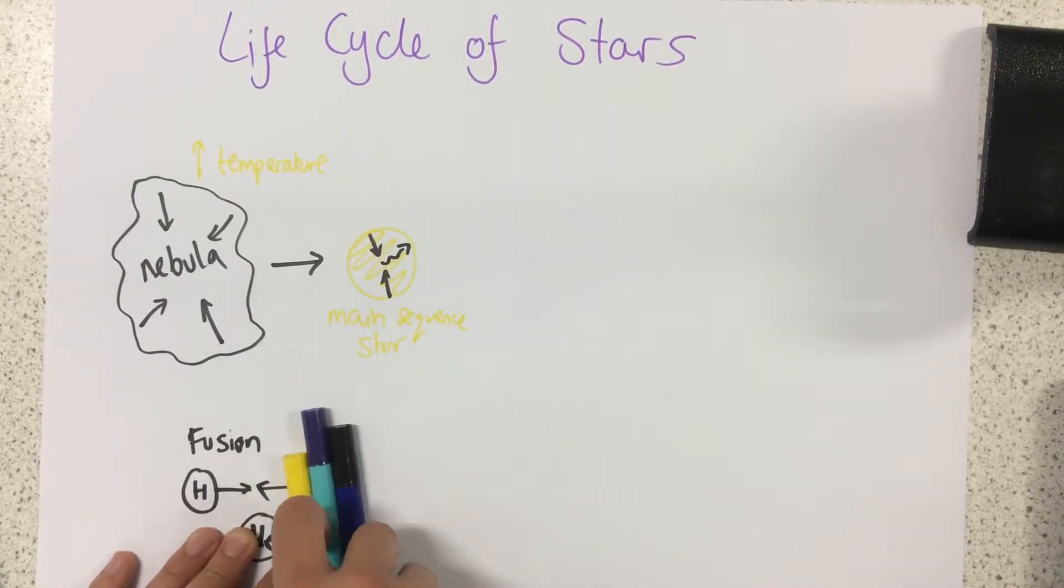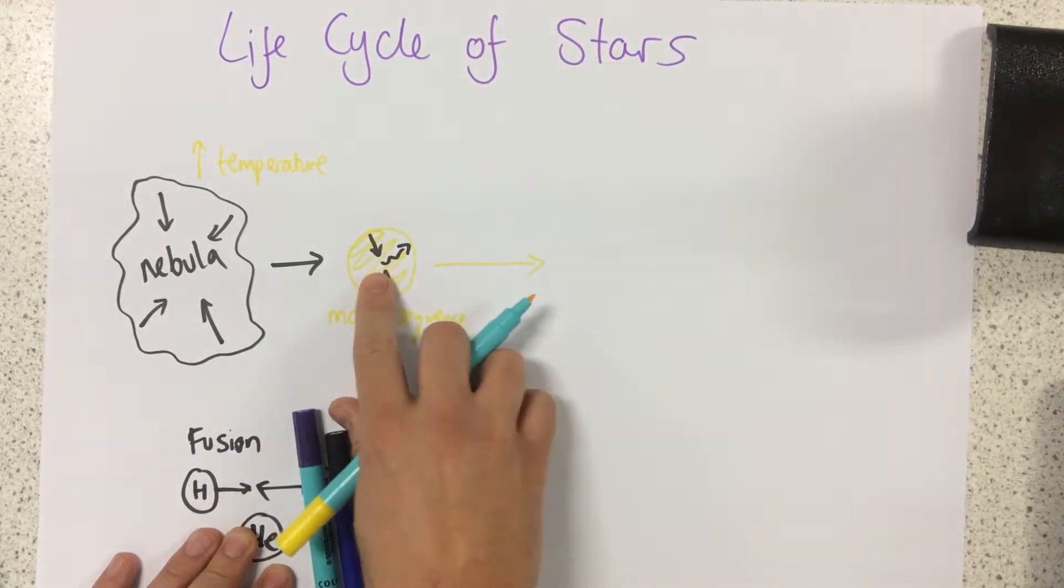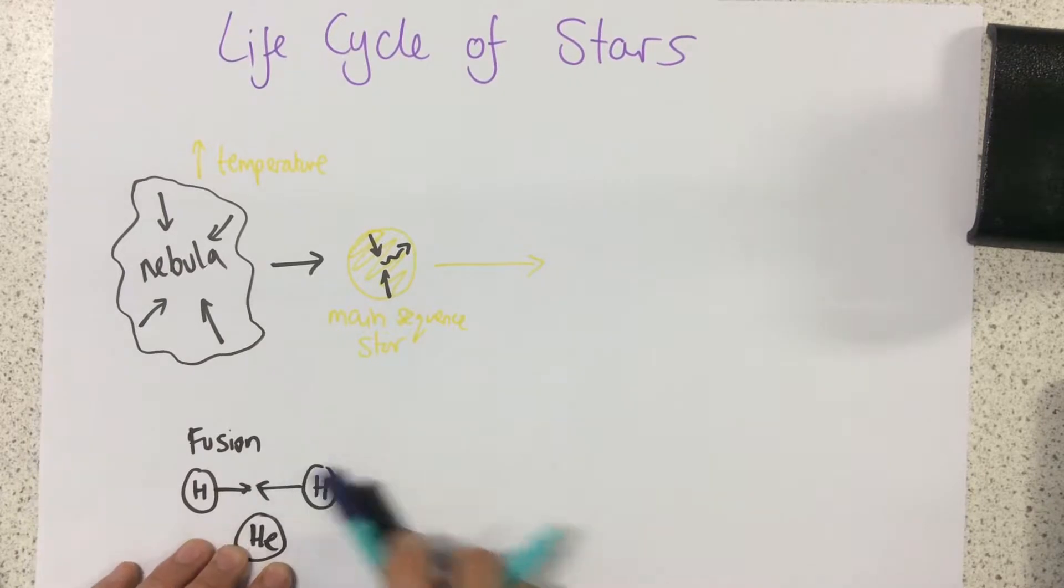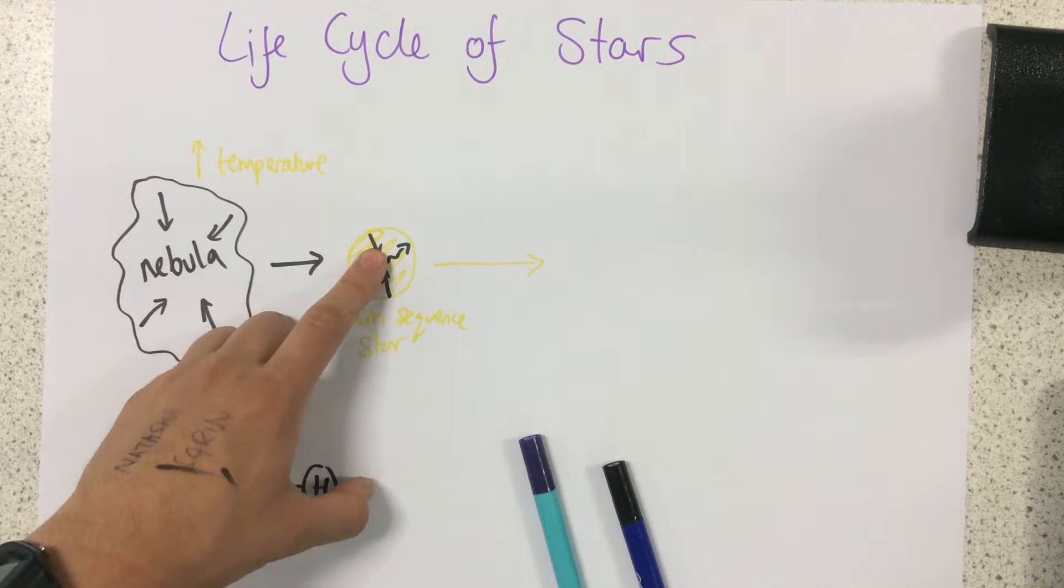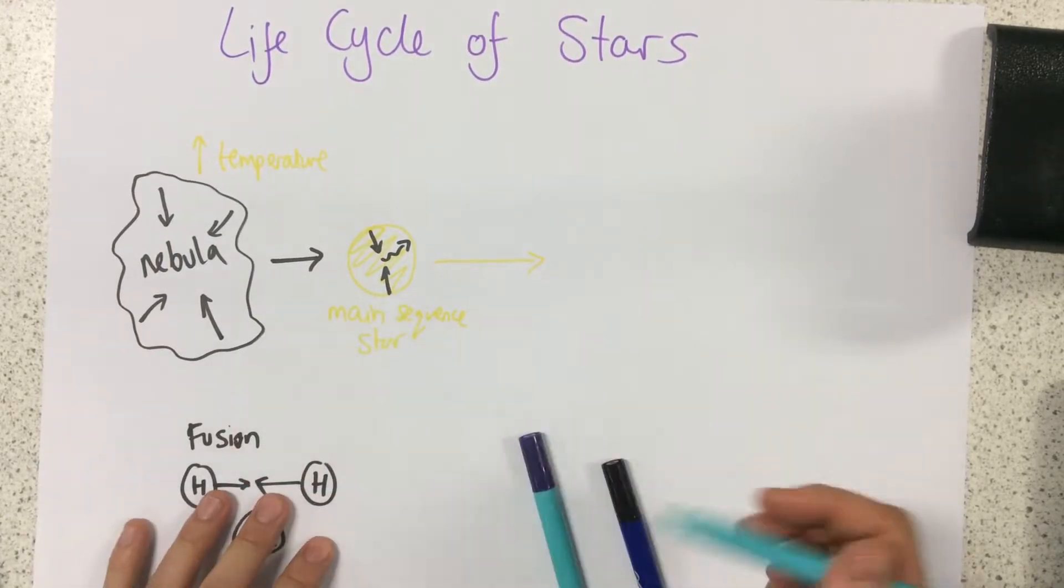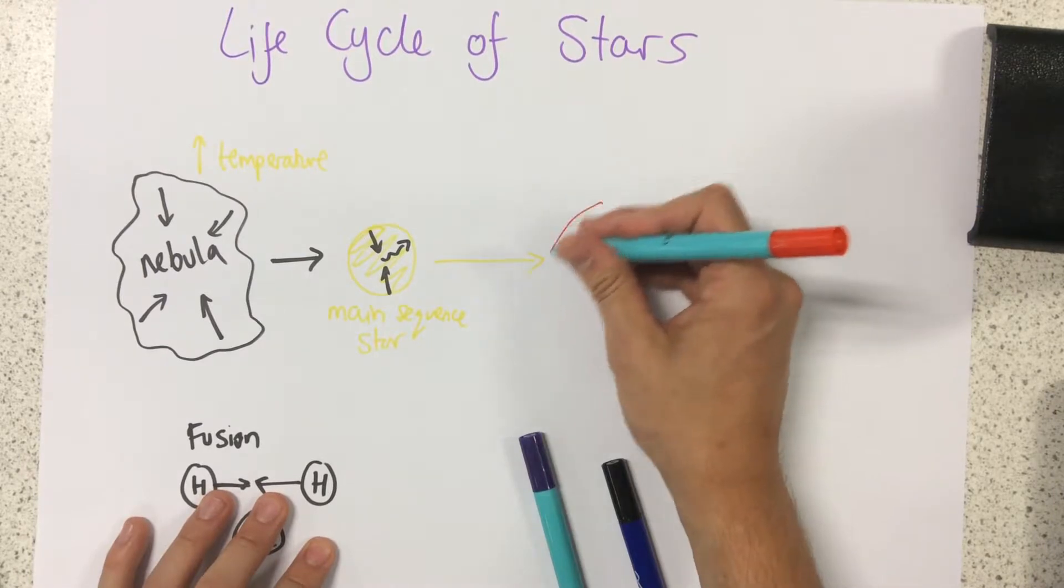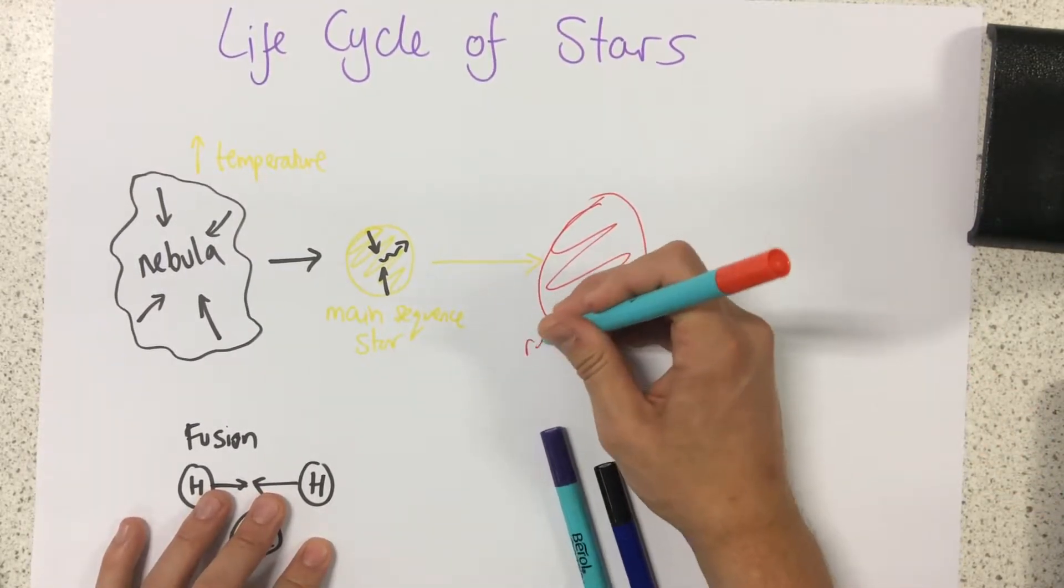Now what happens next is this: because there's only a finite amount of hydrogen for these fusion reactions to be happening in the core, one day it will run out. When it does run out, we form something called a red giant.